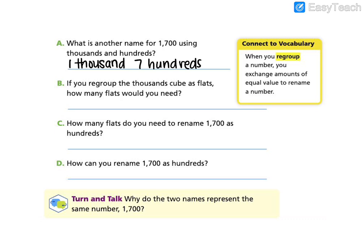If you regroup the thousands cube as flats, how many flats would you need? B is asking us to use this vocabulary word regroup. So let's go ahead and take a look. When you regroup a number, you exchange amounts of equal value to rename a number. So just like we renamed 1,700, we now need to rename that thousands cube as flats. So we talked about that on the previous slide. How many flats are in a thousands cube? There's 10 flats, meaning there are 10 hundreds. So if we regroup that thousands cube, we break it apart into those flats again. How many flats would we need? We would need 10 flats.